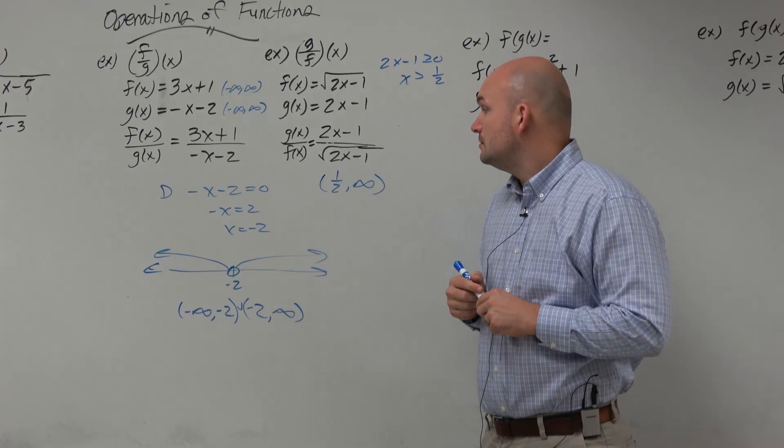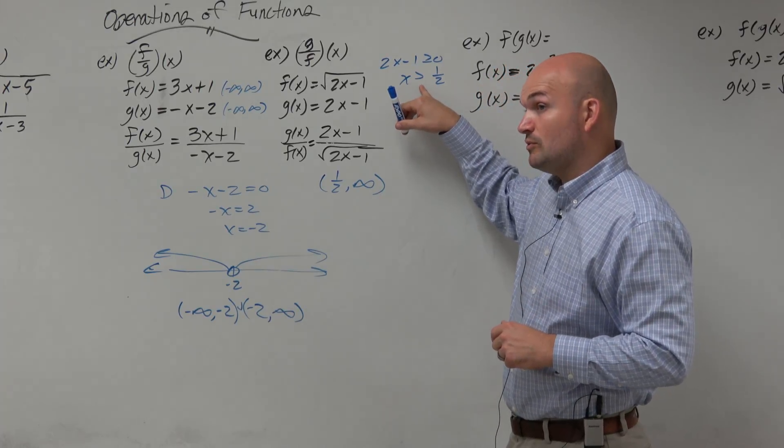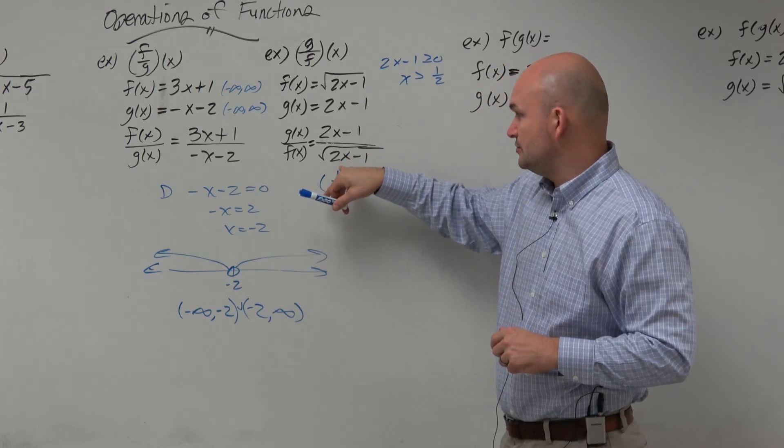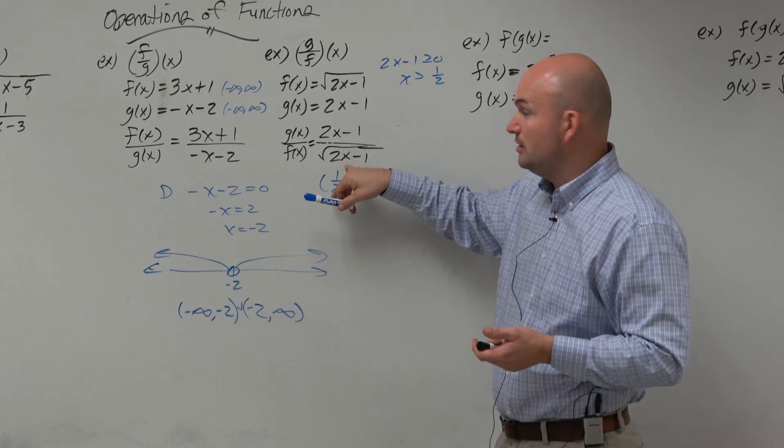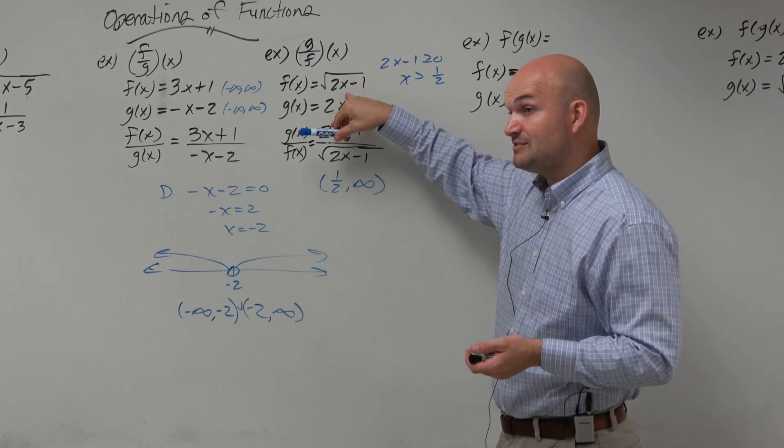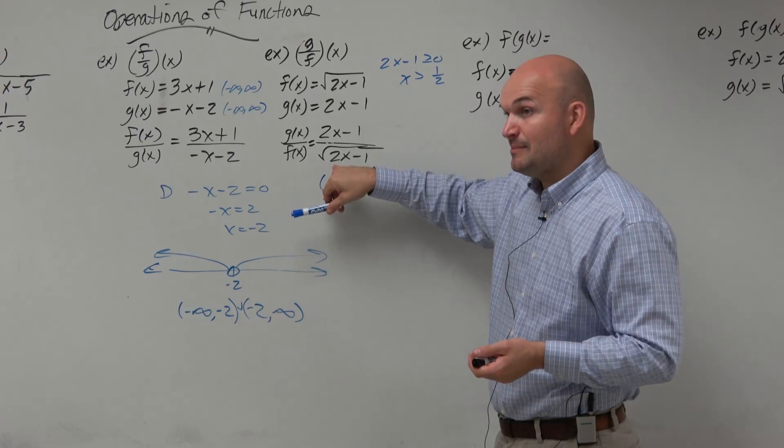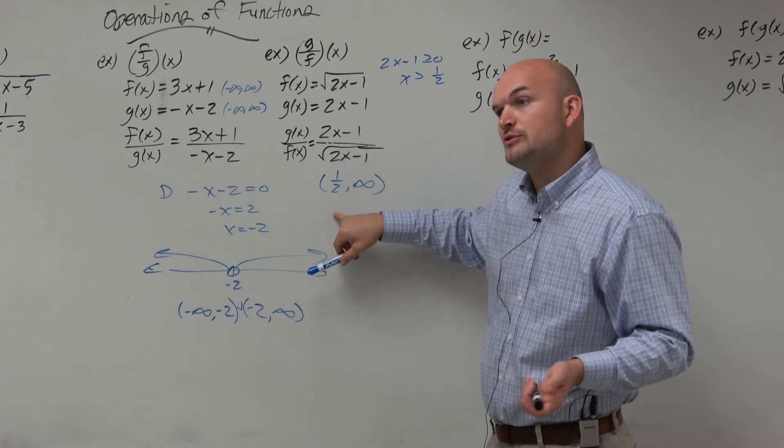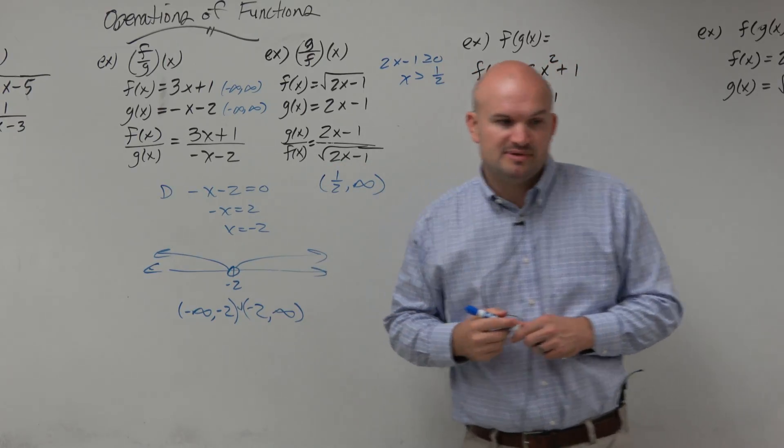So why would we erase the equal to? Because if it is equal to 1 half, plug in 1 half here. 2 times 1 half is 1, 1 minus 1 is 0. That's fine for that function. But when that's 0 in the denominator, we have a restriction on our domain. So we don't want it to be 0 in the denominator.